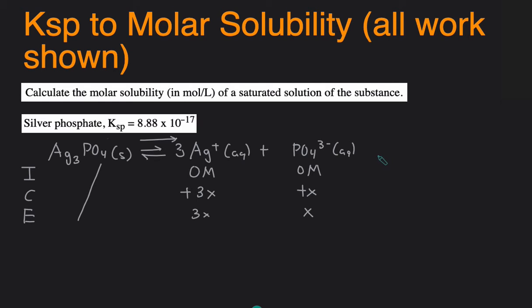Then we set up the Ksp expression. Ksp is equal to the concentration of products divided by concentration of reactants. This will be the concentration of silver raised to a third power because of the coefficient three multiplied by the concentration of phosphate. And then divided by the reactants but the reactants is solid so we don't have anything on the bottom.